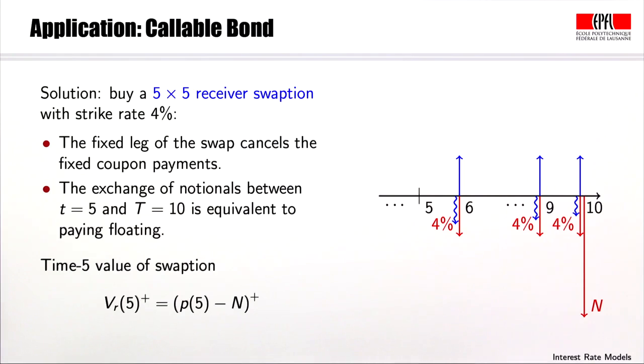Here is the solution. The company can buy a 5 year into 5 year receiver swaption with a strike rate of 4%. The payoff of this swaption at expiry date 5 is just the positive part of the value of the receiver swap that we see on the previous slide.